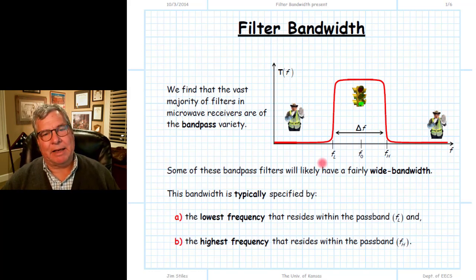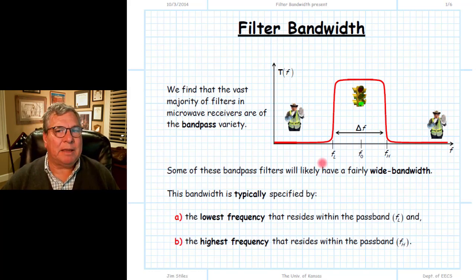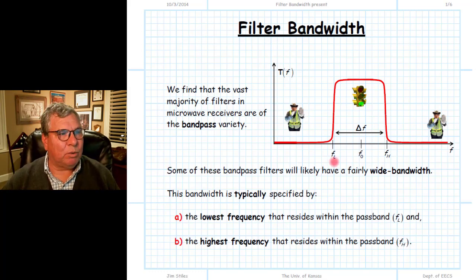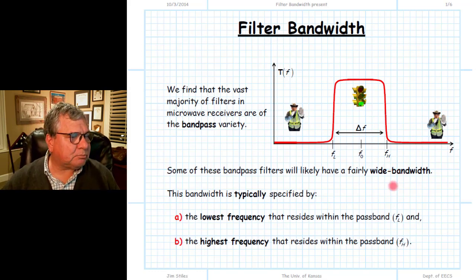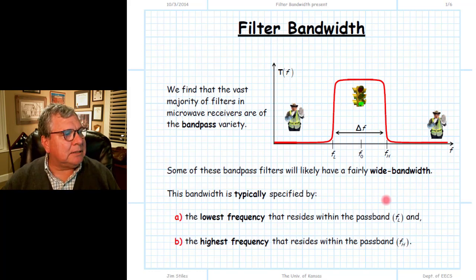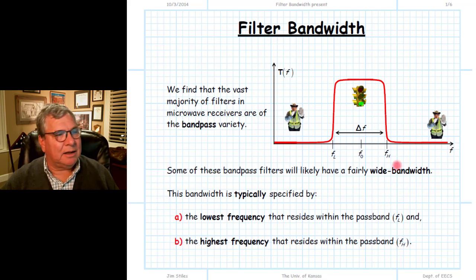So for example, we might say a bandpass filter has a pass band that runs from 1.3 gigahertz to 2.6 gigahertz or something like that. That's how we specify typically the bandwidth of a wideband filter.